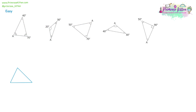We're going to have a look at angles in triangles. The first thing you need to know is that any triangle — whether it's a right angle triangle, an isosceles triangle, an equilateral triangle, or even a scalene triangle — the angles in a triangle always add up to 180 degrees. So the three inside angles, all three of them, will always add up to 180 degrees.